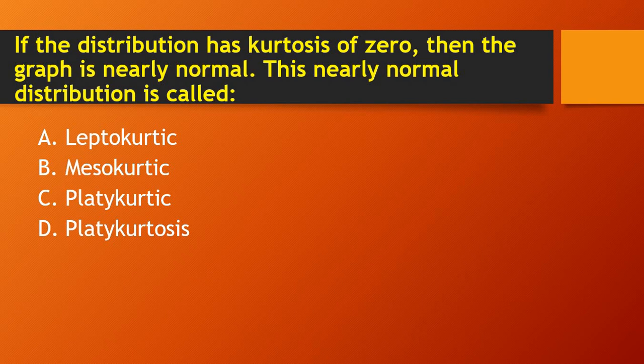Next question: if a distribution has a kurtosis of zero, then the graph is nearly normal. This nearly normal distribution is called — leptokurtic, mesokurtic, or platykurtic? It is related to mesokurtic.